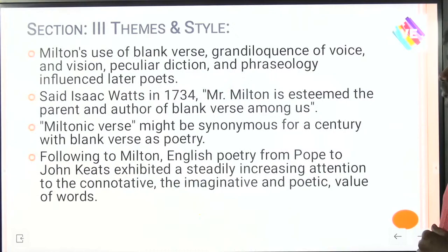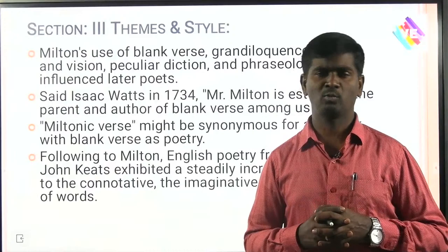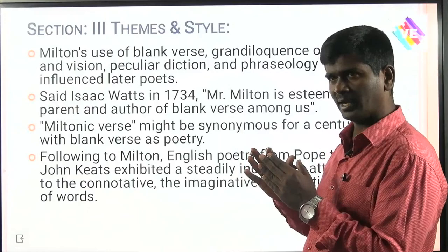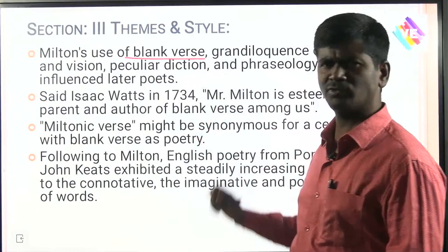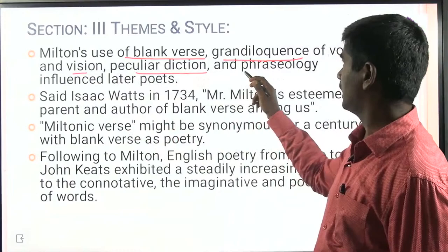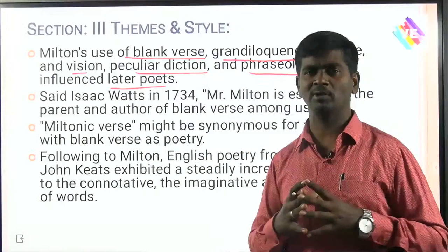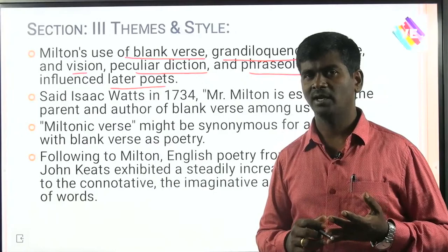What are the themes and style adopted by John Milton? A major aspect is his use of blank verse — unrhymed iambic pentameter lines — in poems like Paradise Lost, Paradise Regained, and Lycidas. His grandiloquence of style, vision, peculiar diction, and phraseology influenced later poets. For example, William Blake's epics Forgevice and Jerusalem were influenced by Milton. John Keats's Hyperion also shows the influence of John Milton.